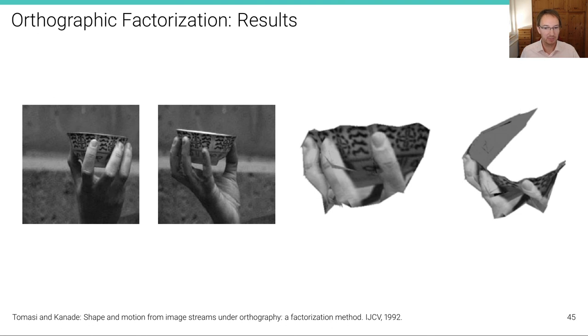And here's another example where this algorithm has been used for a reconstruction of this object here, including the hand. And then a 3D model has been returned by meshing the results. Remember that these are results from 1992. So, this is one of the very first multi-frame reconstruction approach. Mathematically very elegant, but assuming orthography and requiring some additional effort if feature tracks are not complete.